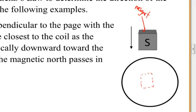Let's ask ourselves Lenz's Law questions. First: is the magnetic flux changing? Yes it is. The magnetic flux is changing because initially there are no magnetic field lines penetrating the coil, but finally the magnetic field lines do penetrate the coil. So the next question: is the magnetic flux increasing or decreasing? In this case, the magnetic flux is increasing.